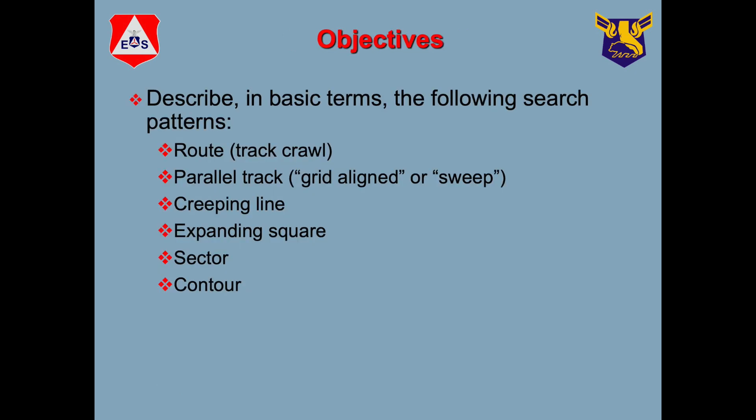So those are the search patterns. We talked about the route search, or sometimes called track crawl. The parallel track or grid line, another term for that is also a sweep search. That's on flat terrain and usually in a grid type of scenario. Creeping line, where you're following the route, checking out more thoroughly along the route. We have two point-based search patterns, the expanding square and the sector. And then finally, in mountainous terrain, the contour search.